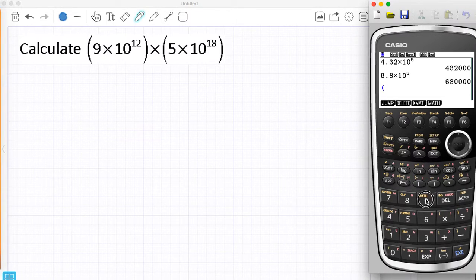So first of all, I would like to show you how to do it with a calculator. So I'm going to put a bracket, although I don't need it. So it's 9 times 10, and the power button here, and your calculator it might be x to the y. So I've got 9 times 10 to the power of 12, and then 5 times 10 to the power of 18.